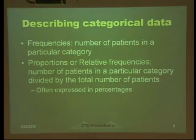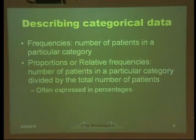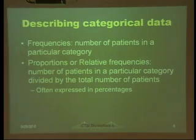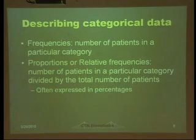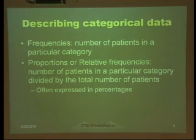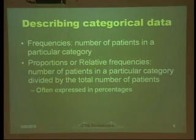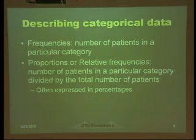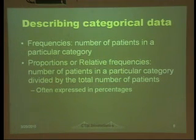How can you describe categorical data? There are two typical ways. The first one is frequency — the number of patients in a specific category. The second way is proportion or relative frequency. You can simply calculate the number of patients in a specific category divided by the total number of patients. You can also express proportions as percentages. Proportions and percentages are basically the same.